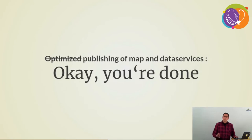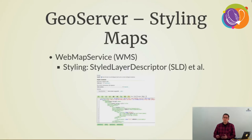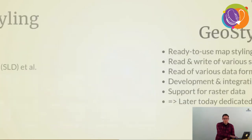Now we can publish a map and data service — but is it optimized yet? GeoServer produces maps, but by default it uses default styling. To make an optimized service, you need to configure the cartographic layout. Inside GeoServer, you use SLD (Styled Layer Descriptors) for this. Other options include Cartus CSS, but SLD is always used internally — and it's XML, which can sometimes be a pain.